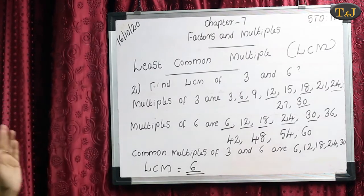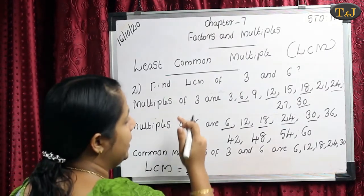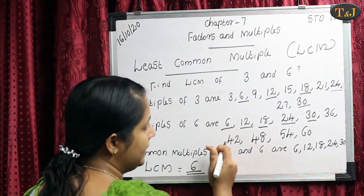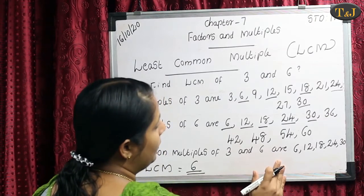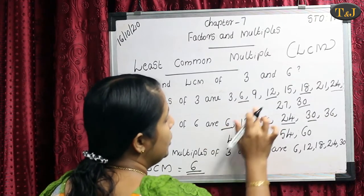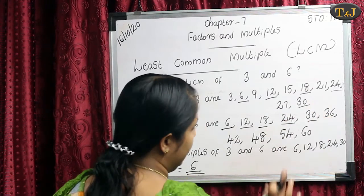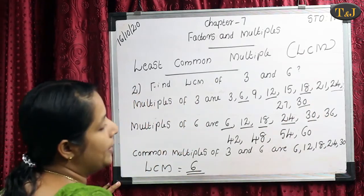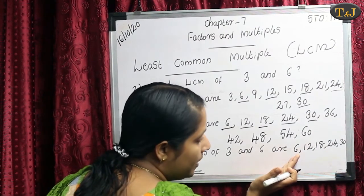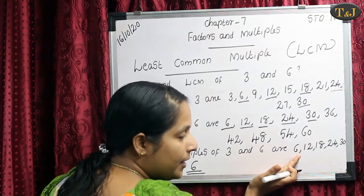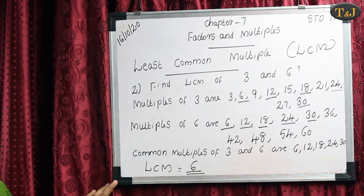Once again: Find LCM of 3 and 6. We write the 10 multiples of both numbers, select the common multiples — 6, 12, 18, 24, and 30 — then the least common multiple is the smallest among them. Yes, 6 is the smaller multiple. Therefore our LCM equals 6.